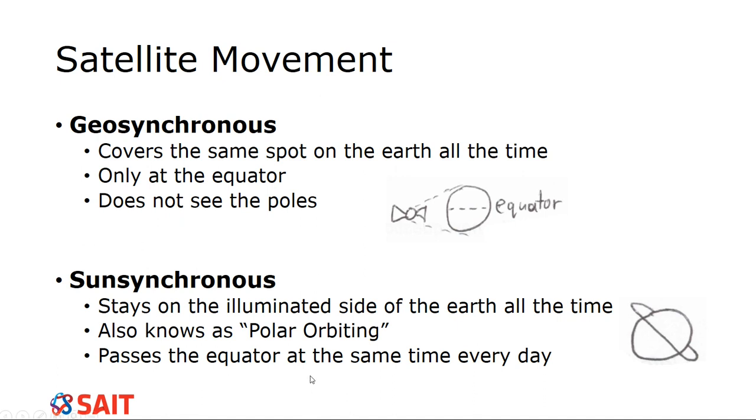So this sun-synchronous satellite, why is it called sun-synchronous? Because it stays in the sun. Most of these have solar panels on them. Or they are trying to capture data that is illuminated by the sun. So that's why it stays on that. But because it's closer to the Earth, it can be a lot better for resolution, right?